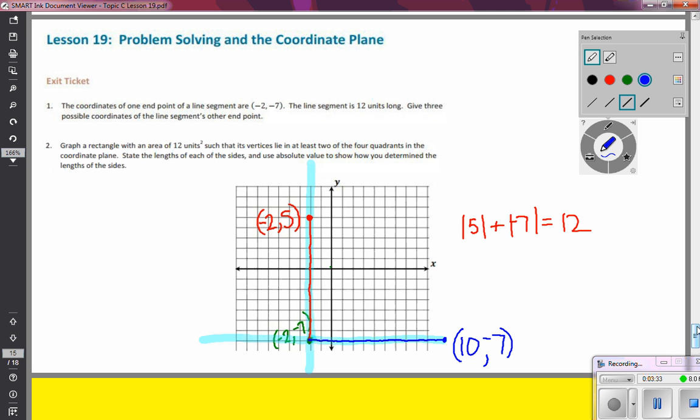So to prove that it is a length of 12, I can see I had 2 to the left of the x-axis, so absolute value of negative 2, plus 10 units on the right of the x-axis, absolute value of 10, is 2 plus 10, which gives me another length of 12.